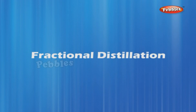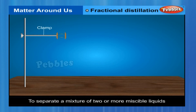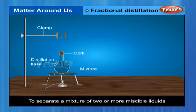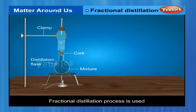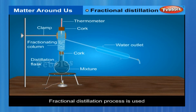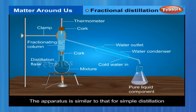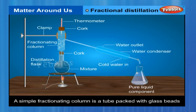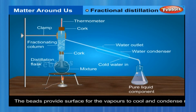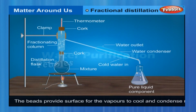To separate a mixture of two or more miscible liquids for which the difference in boiling points is less than 25 K, fractional distillation is used — for example, for the separation of different gases from air or different fractions of petroleum products. The apparatus is similar to that for simple distillation, except that a fractionating column is fitted between the distillation flask and the condenser. A simple fractionating column is a tube packed with glass beads, which provide surface for vapors to cool and condense repeatedly.